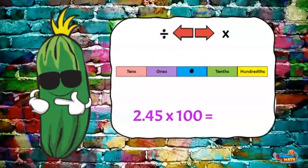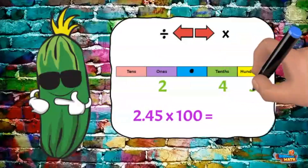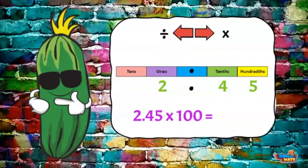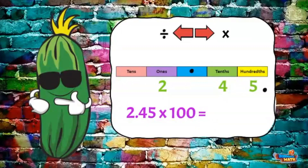2 and 4500 times 100. I will show you on the place value chart — man, I love that thing. I am multiplying so I will move the decimal to the right. There are two zeros in 100, so I will move the decimal two place values to the right like this. The answer is 245.